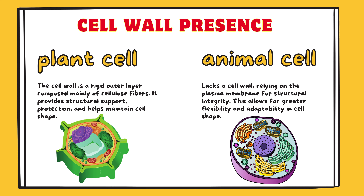Cell wall presence. Plant cell: the cell wall is a rigid outer layer composed mainly of cellulose fibers. It provides structural support, protection, and helps maintain cell shape. Animal cell lacks a cell wall, relying on the plasma membrane for structural integrity. This allows for greater flexibility and adaptability in cell shape.